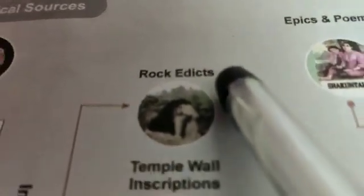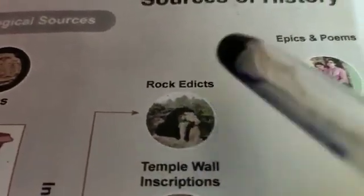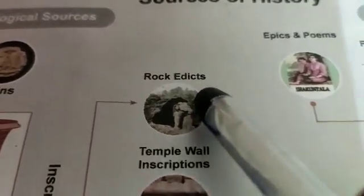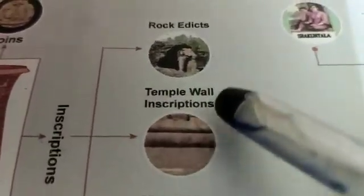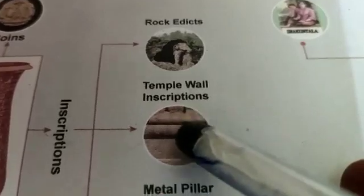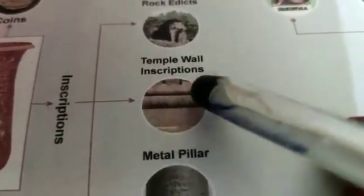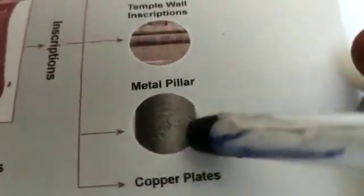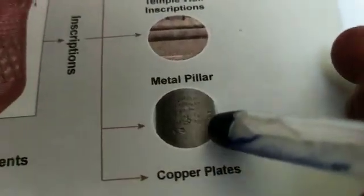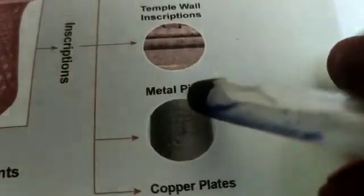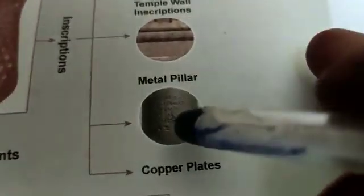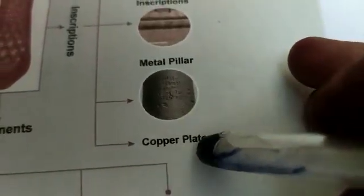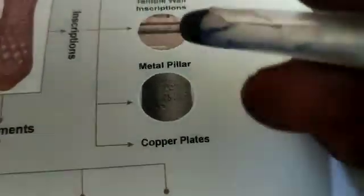Next are inscriptions. The first type is Rock Edicts — inscriptions carved on temple walls. The second type is metal pillars — for example, the Iron Pillar in Delhi. The third type is copper plates and iron plates, which are also part of archaeological sources.